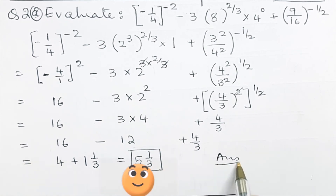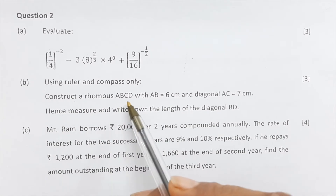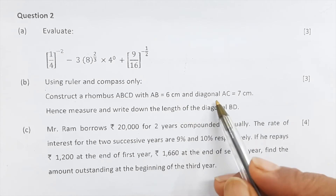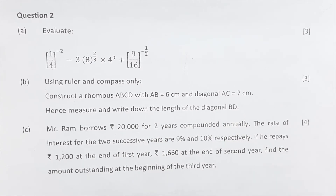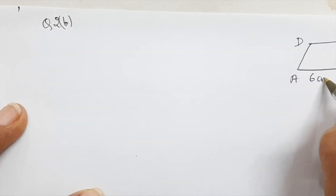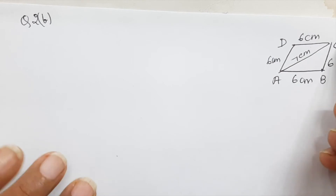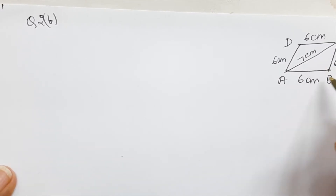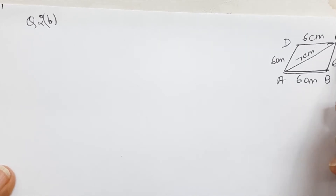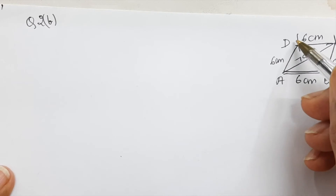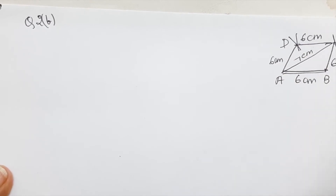Question 2b: using ruler and compass only, construct rhombus ABCD with AB = 6 cm and diagonal AC = 7 cm; then measure and write down the length of diagonal BD. We first draw a rough diagram — a rhombus with each side 6 cm and diagonal AC = 7 cm — to plan the construction: draw AB, then arc of radius 6 cm from B and arc of radius 7 cm from A to locate C, then arcs of 6 cm from both C and A to find D.